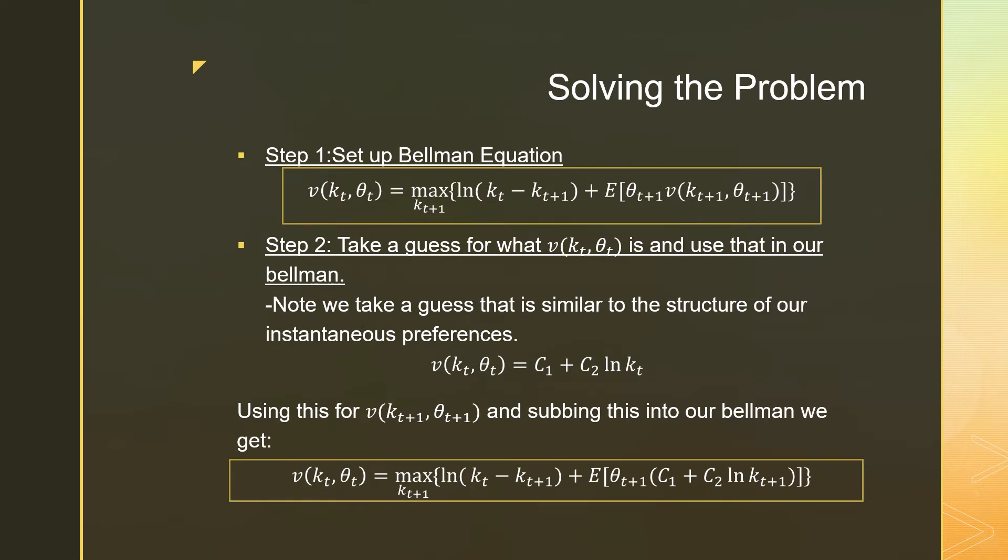So step number one, we're just going to set up our Bellman equation. The first part here looks like our standard problem. But our second part, we're going to have our discounting term, and it's going to be inside the expectation. That's just how the structure of the problem is going to be.